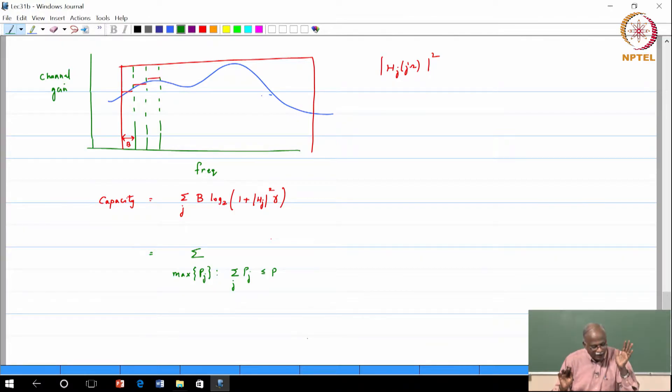So now the objective function will be B times logarithm base 2, 1 plus gamma times magnitude H of J squared. That is my - so this becomes my effective SNR.